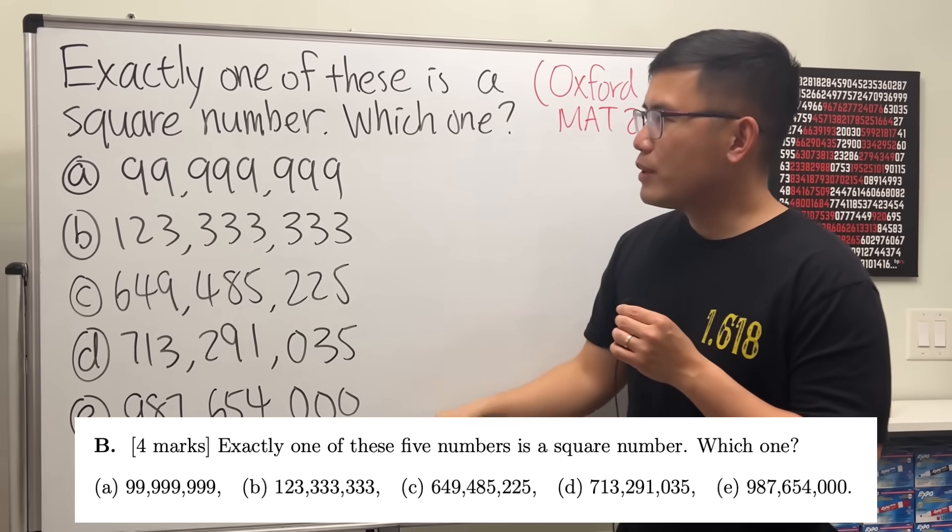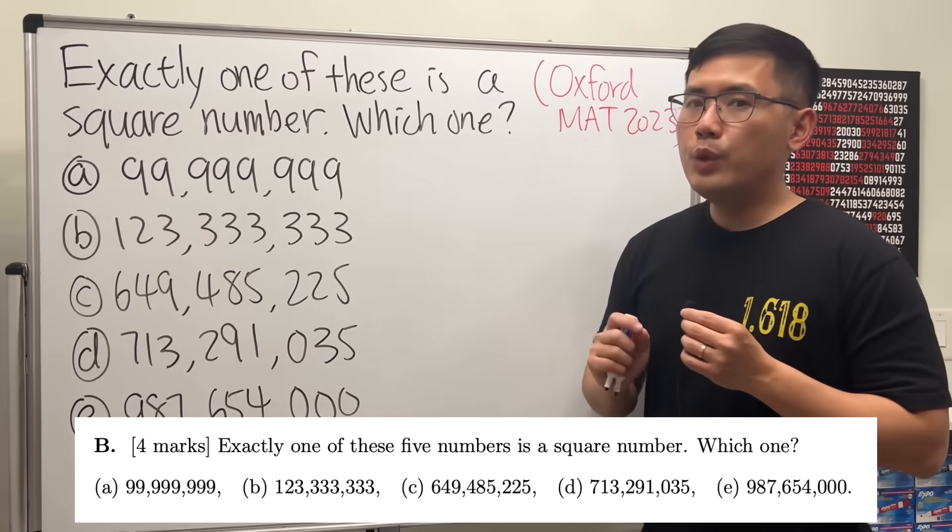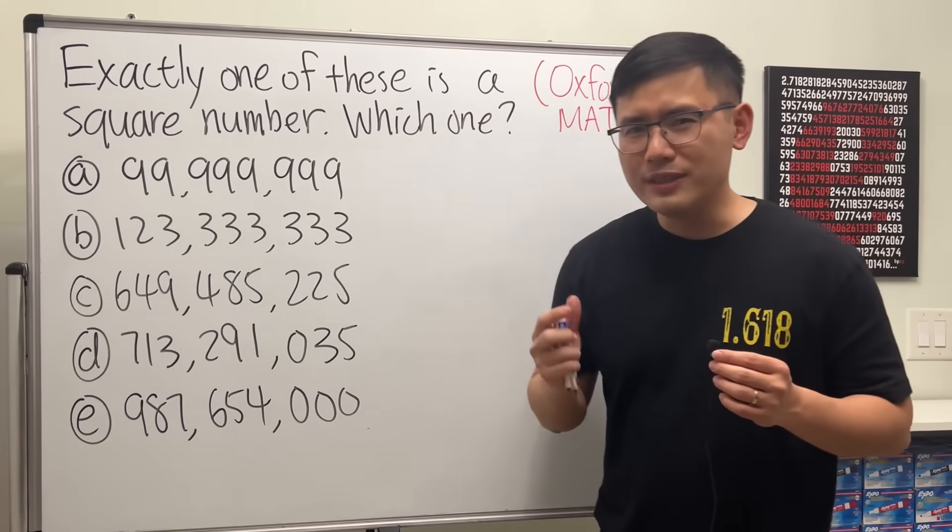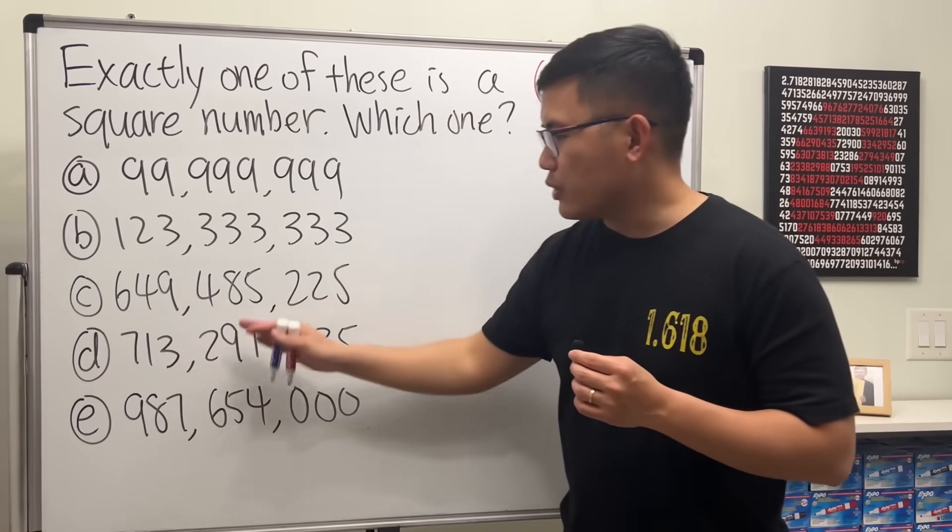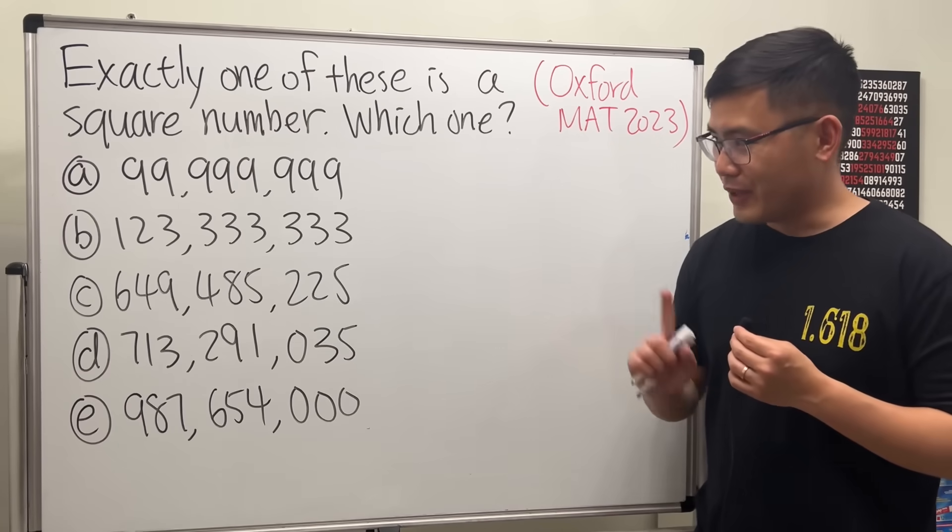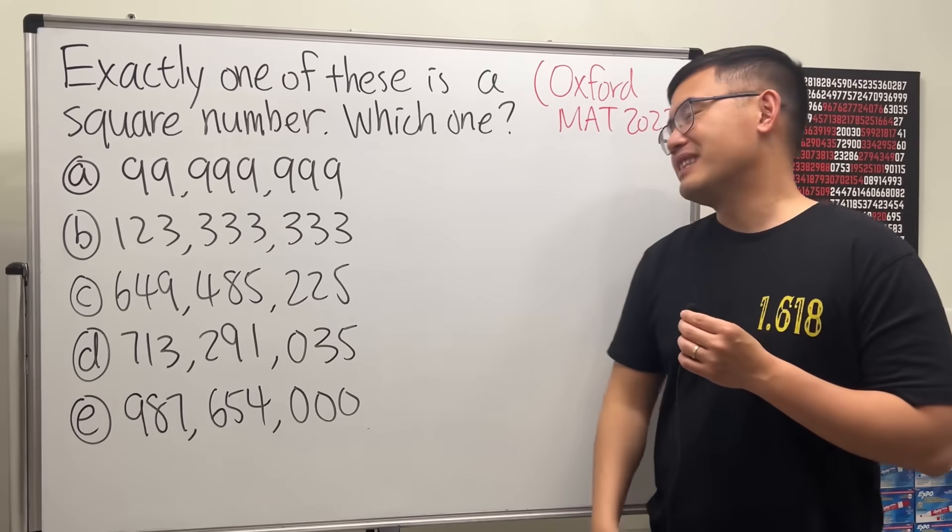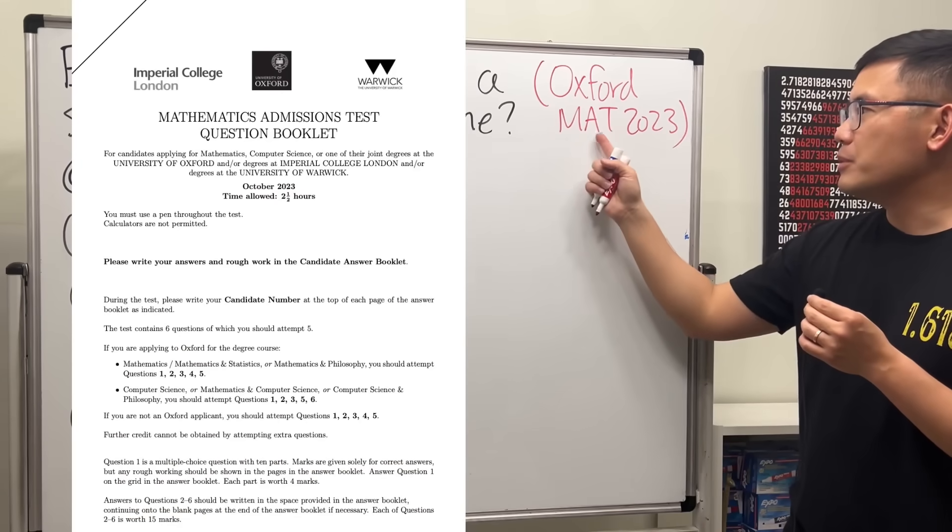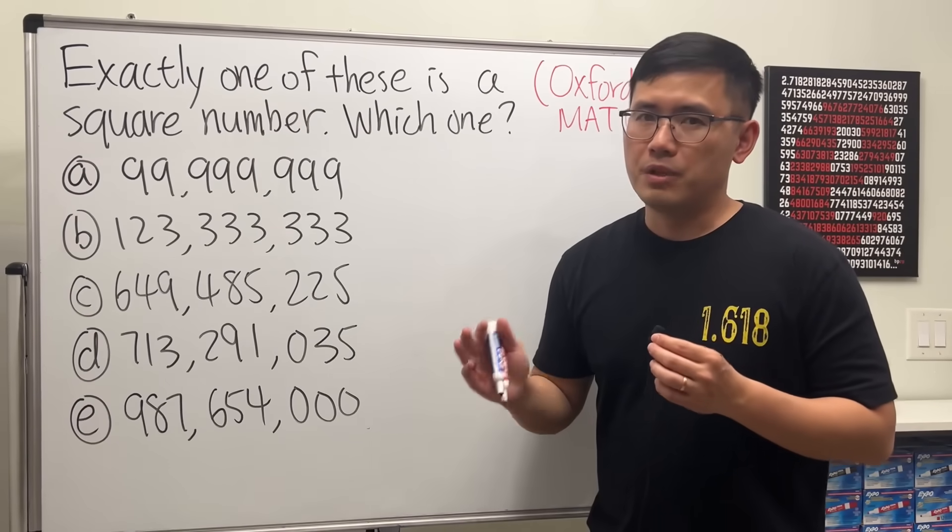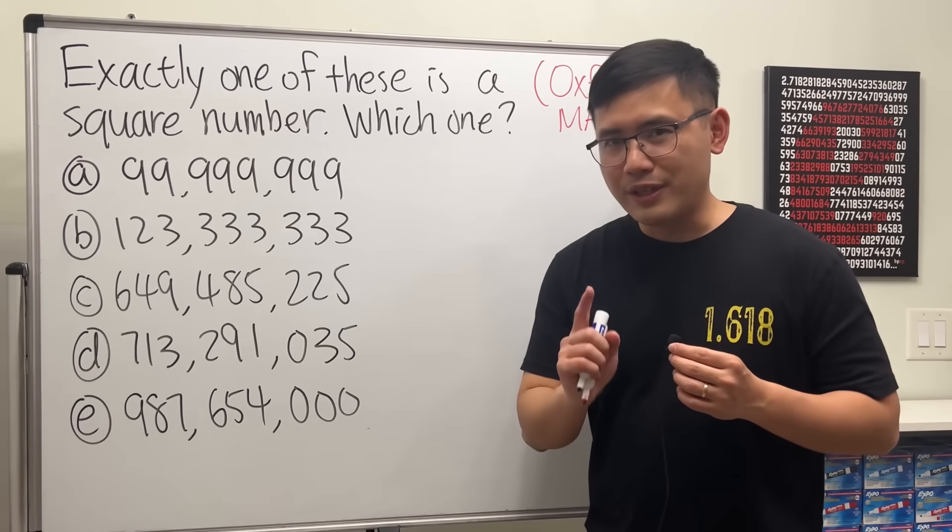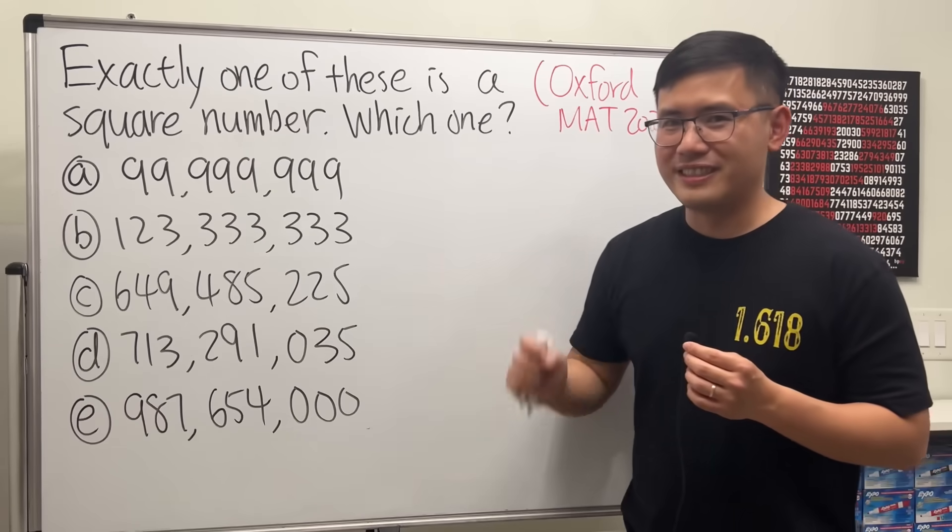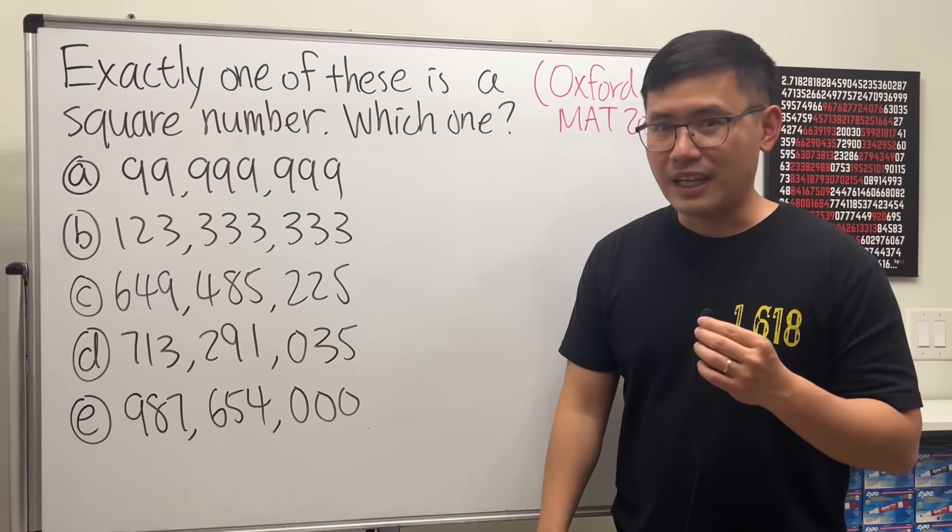Okay, exactly one of these numbers is a square number and we would like to know which one. Of course we are not going to be using a calculator and take the square root of each option and see if we end up with a whole number or not. No, because this question is actually from the Oxford Math Admission Test in the year of 2023. It really tests your understanding with perfect square numbers. So right now you know the deal, please pause the video and try this first.